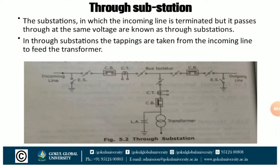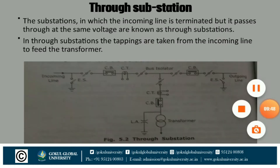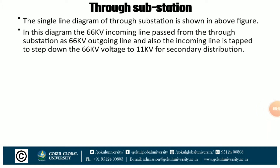Now we discuss about the through substation. The substation in which the incoming line is terminated but passes through at the same voltage is known as the through substation. In a through substation, tappings are taken from the incoming line to feed the transformer. In the single line diagram of the through substation, the 66 kV incoming line is stepped down to 11 kV for secondary distribution.